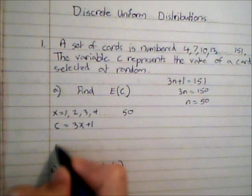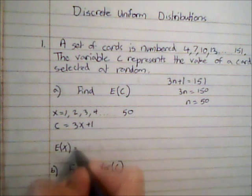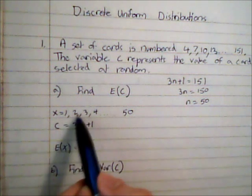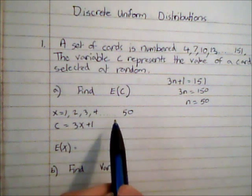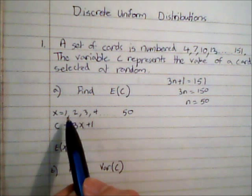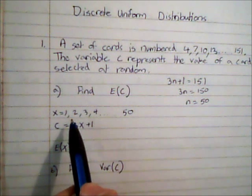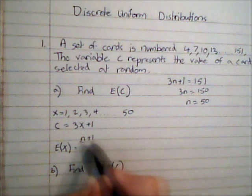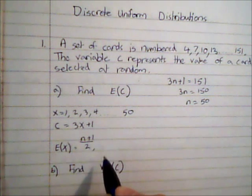To find E of x, because we've got it in this special form where it's 1, 2, 3, 4 up until a given value of n—every positive integer starting from 1—we can use the formula (n+1)/2 for the expected value, which is 51/2.